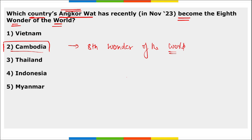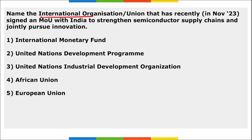Angkor Wat was inscribed on the World Heritage List since 1992, and now has been described as the world's eighth wonder. Next: which international organization signed an MOU with India to strengthen semiconductor supply chain and jointly pursue innovation? It is India and the European Union that joined hands.